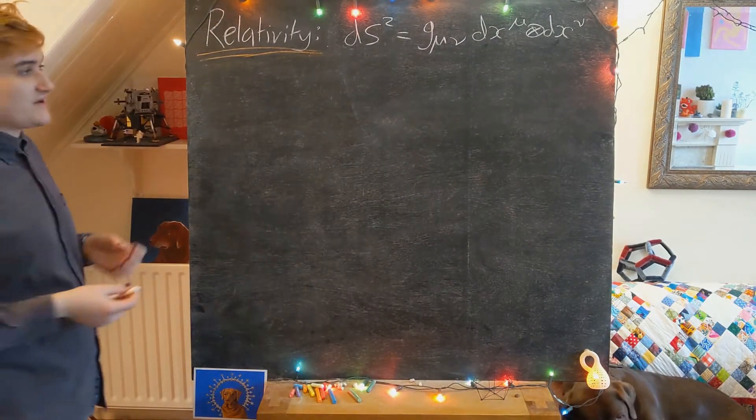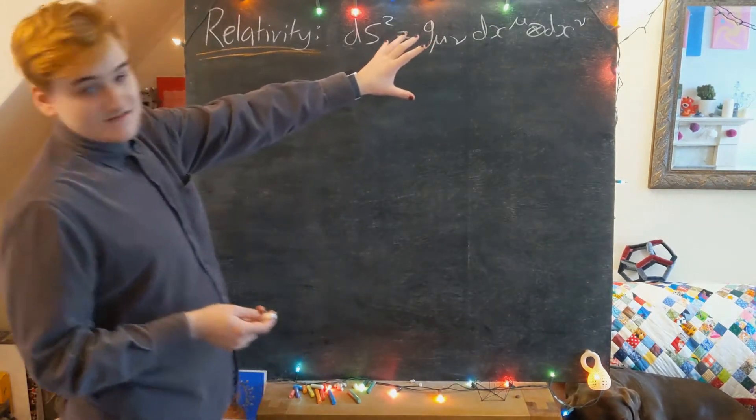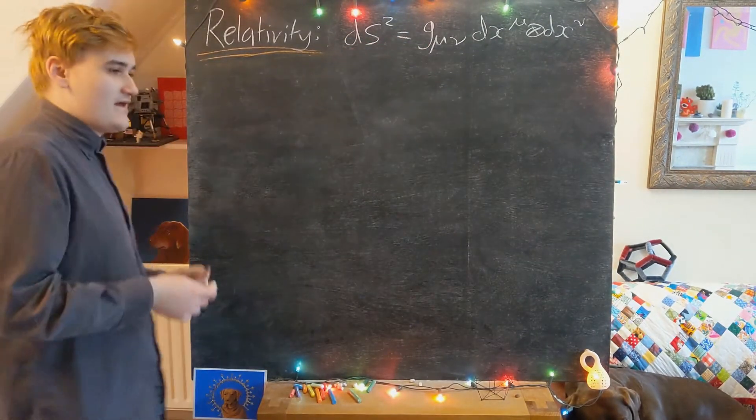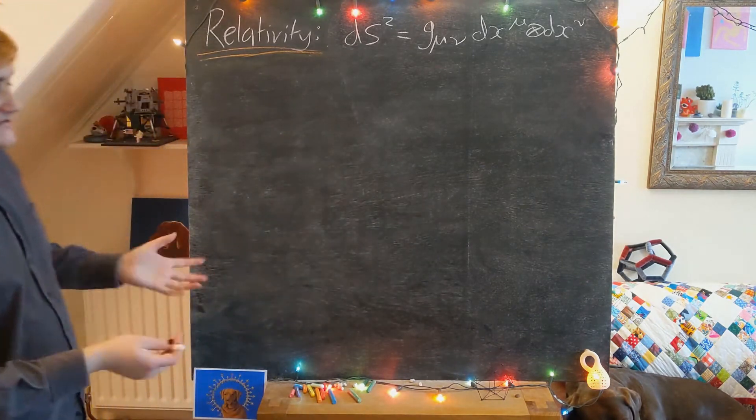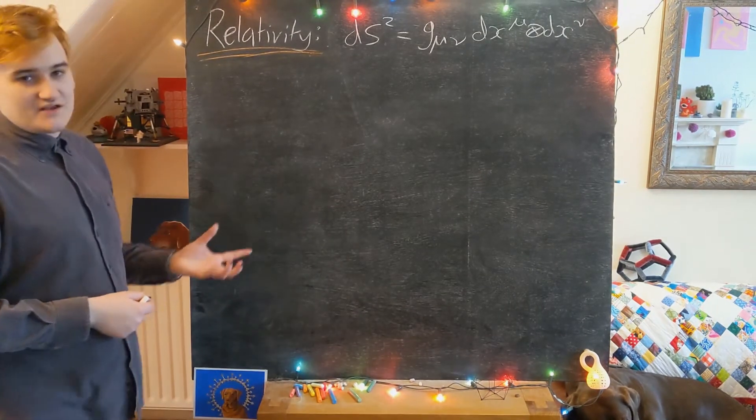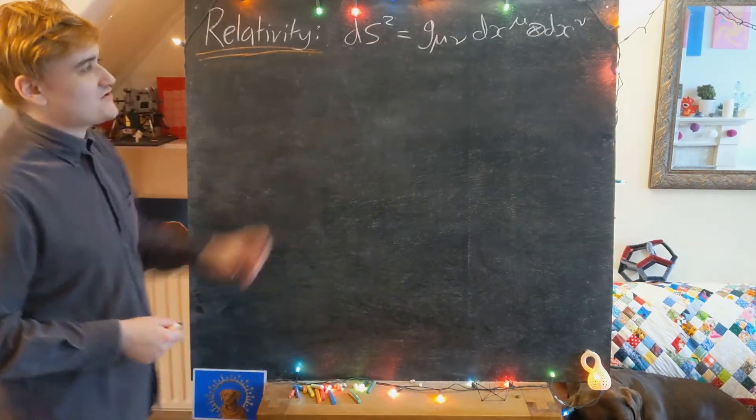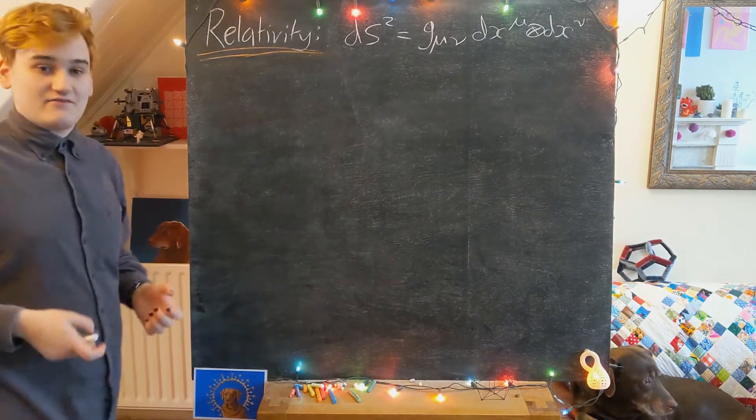But the way that we should view the action of this metric is that it eats one of the vectors and does something to the components. We saw how it effectively lowers the components and turns them into one-form components. So when we feed two vectors into the metric, one vector is turned into a one-form that then eats the other vector.